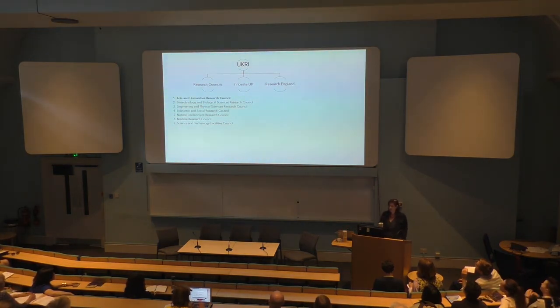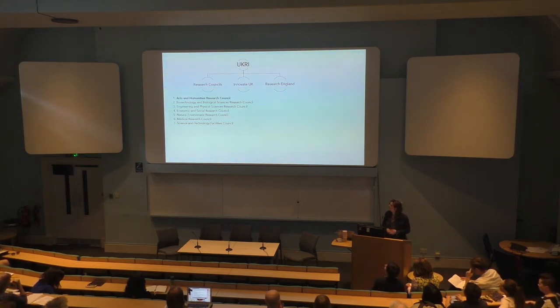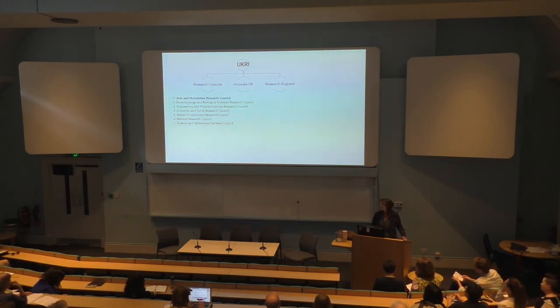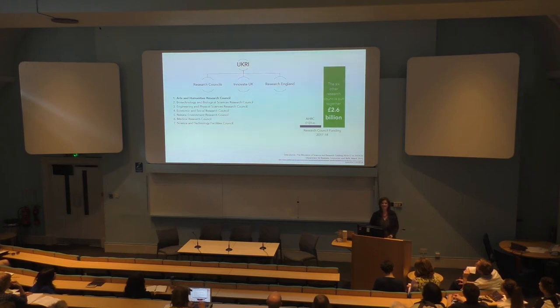Here's my more depressing slide — brace yourselves. We need also to think about the financial structures that underpin and inform our subject. There are seven research funding councils in this country, of which the smallest is the Arts and Humanities Research Council, which gets a grant from the government of about £100 million per year. When you add up what the other six councils get and compare it to this amount, it is very difficult to visualize in a bar graph, because the other councils added up together net £2.6 billion per annum. The AHRC — so that's all humanities disciplines — gets a tiny fraction of that amount.